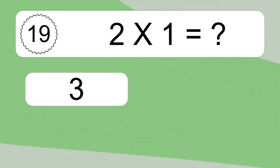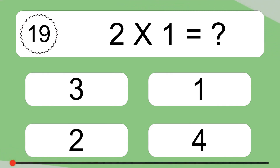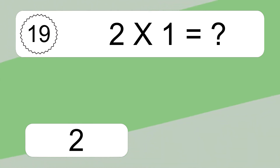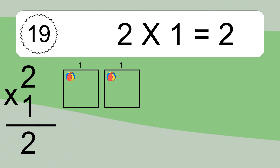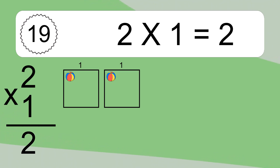2 times 1 equals what? 2 times 1 equals 2. We have 2 boxes, and each box has 1 colorful ball inside. If you count all the balls in all the boxes together, you will have 2 times 1 balls. This equals 2 balls.